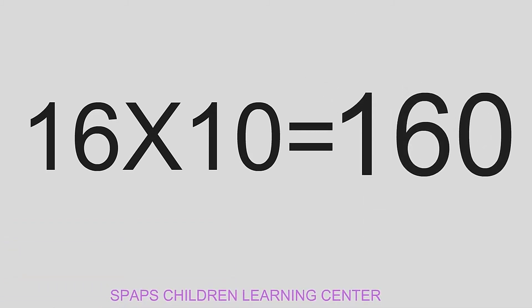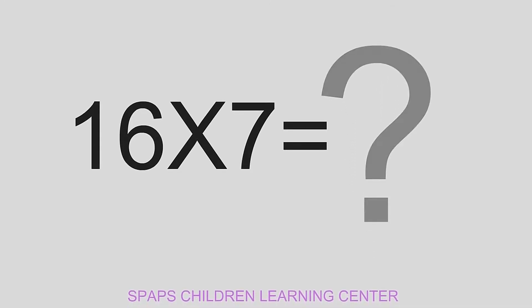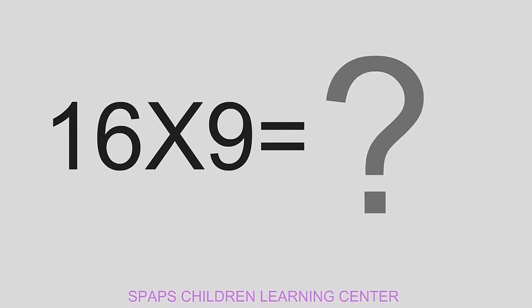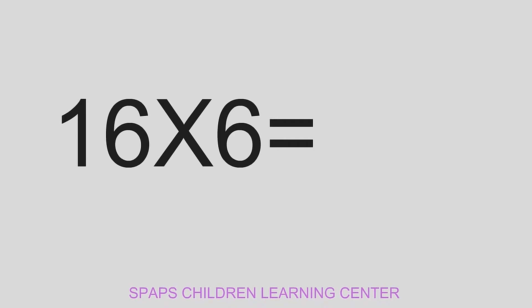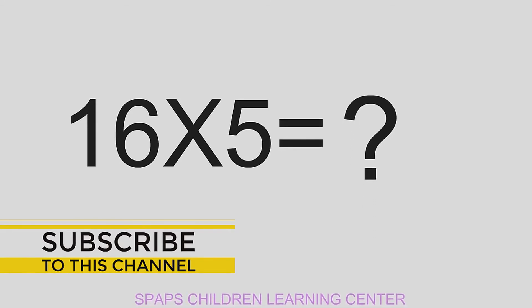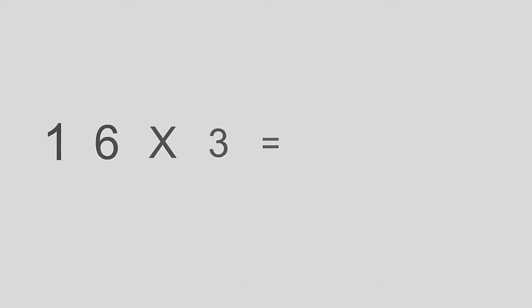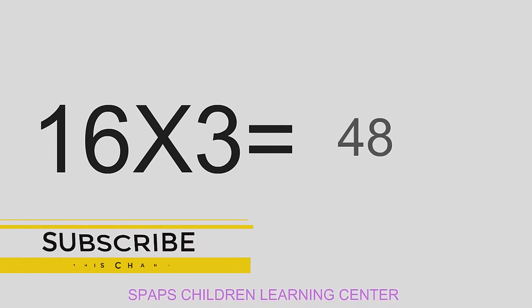16 times 10 equals 160. 16 times 7 equals 112. 16 times 9 equals 144. 16 times 6 equals 96. 16 times 5 equals 80. 16 times 3 equals 48.